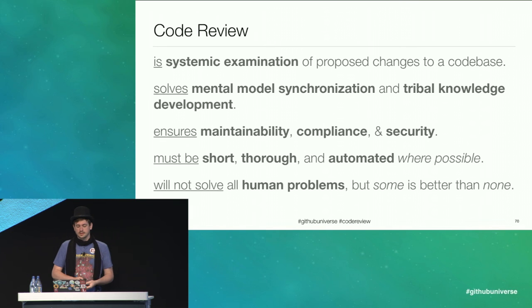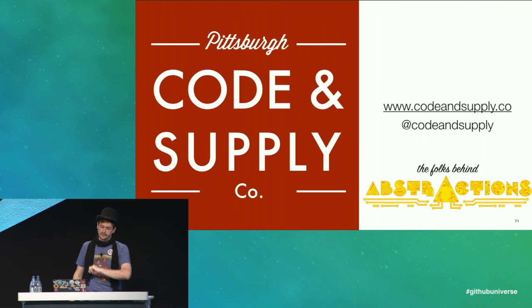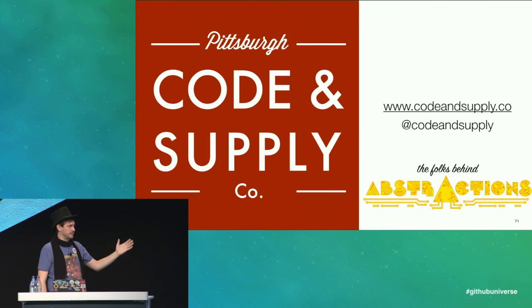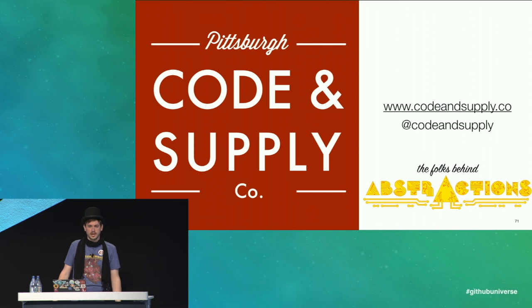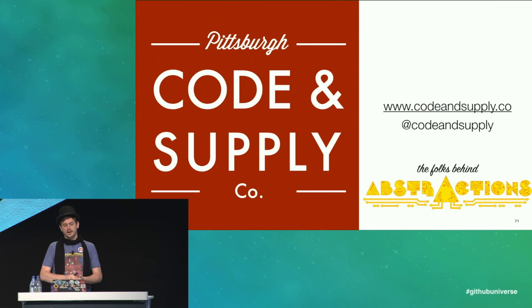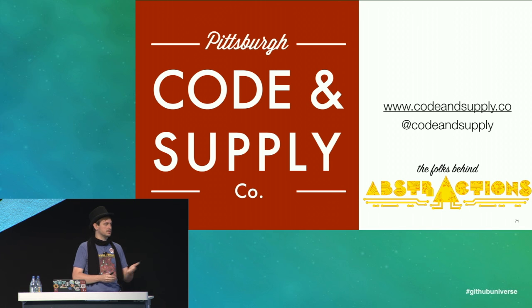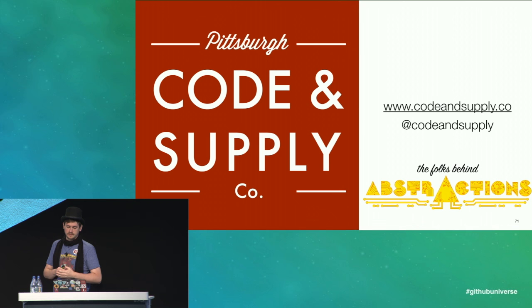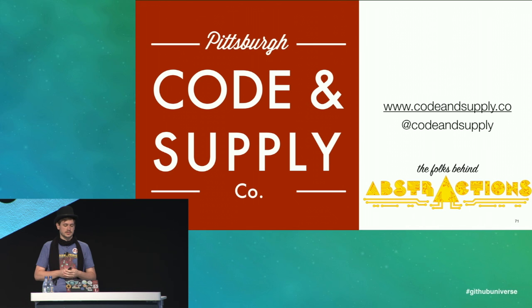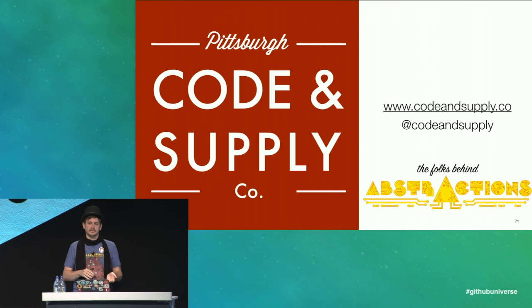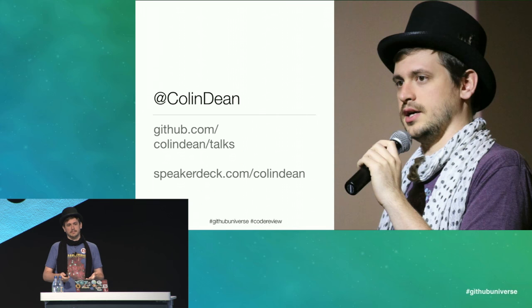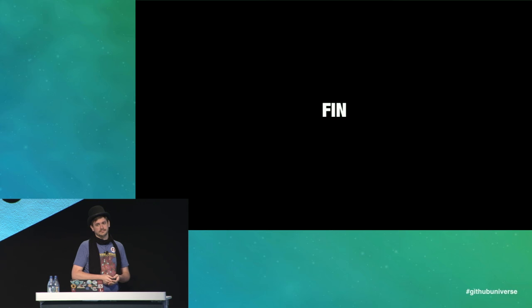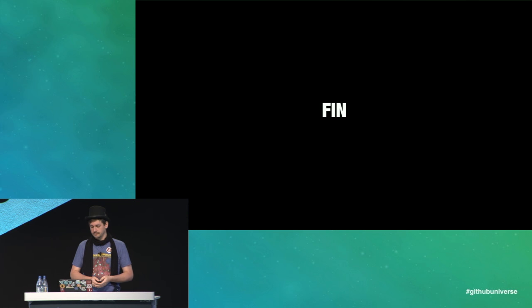So please, go forth and review code. But before you do, I have to do a shameless plug for a community I organize: Pittsburgh Code and Supply. We're Pittsburgh's largest group of software developers. We just held Abstractions, a 1,500-person multidisciplinary conference with nearly universal praise. We'll be doing another smaller event in 2017, so please keep your eyes peeled for that. I'm Colin Dean, and thank you for listening.